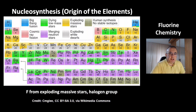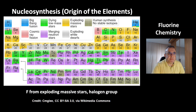This is a picture of the periodic table. Element fluorine is located at the top right corner. It's a member of the halogen group. And fluorine comes from exploding massive stars.